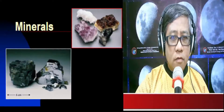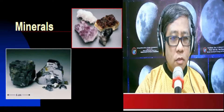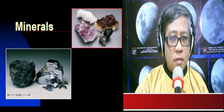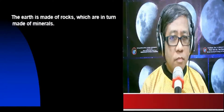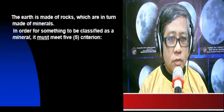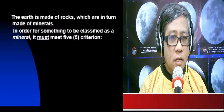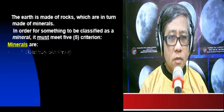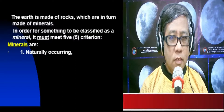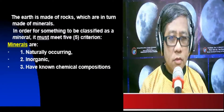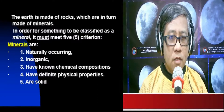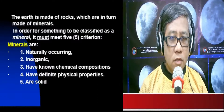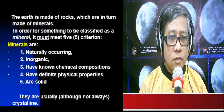Hello, greetings. For this part of our geology unit, we shall study minerals. Our planet is made up of rocks, which in turn are made up of minerals. In order for something to be classified as a mineral, it must satisfy the following: minerals are naturally occurring, inorganic, have known chemical compositions, have definite physical properties, and are solids. In addition, minerals are usually, although not always, crystalline.